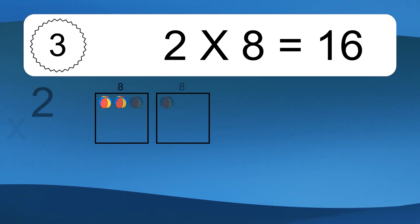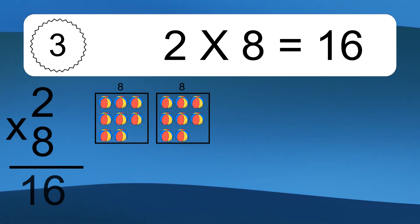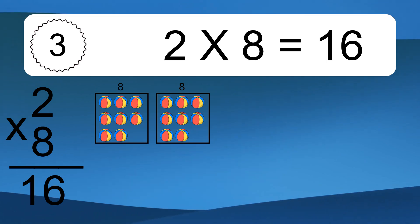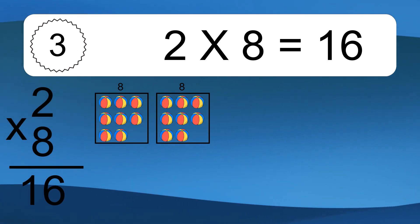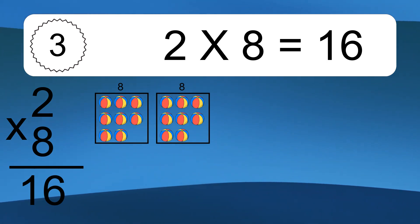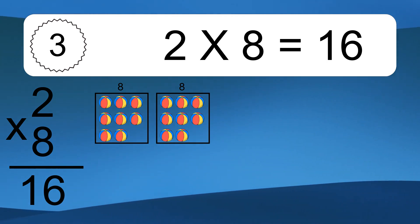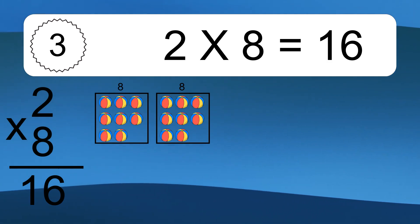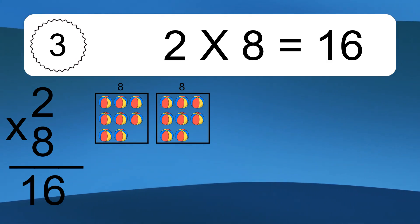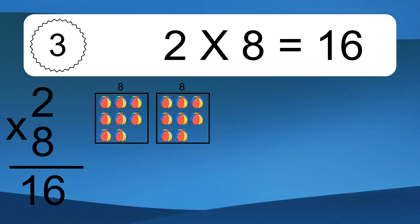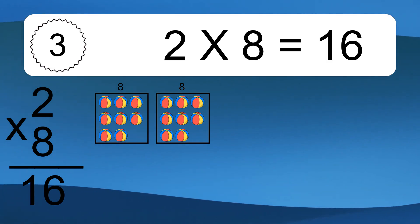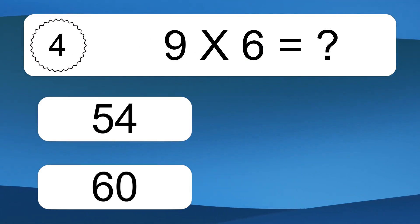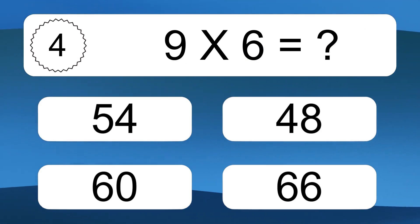2 times 8 equals what? 2 times 8 equals 16. We have 2 boxes, and each box has 8 colorful balls inside. If you count all the balls in all the boxes together, you will have 2 times 8 balls.